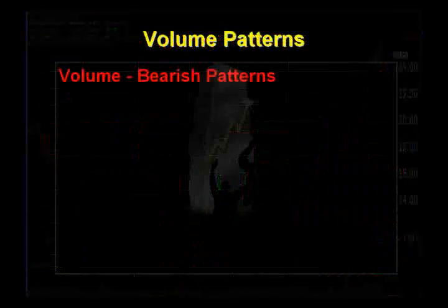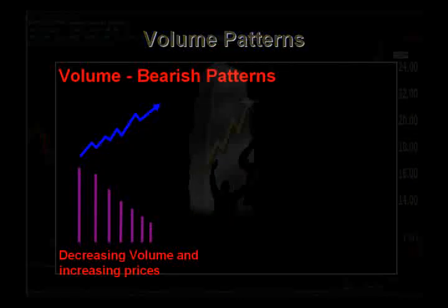Now let's look at some bearish volume patterns. The stock price is rising but the volume is decreasing. This diagram shows that as the stock price is rising, the volume is falling, suggesting there is not much conviction in this up move. The up move is not supported by decent volume — volume is tailing off, which means at some point the rise is likely to stop and a fall will follow.